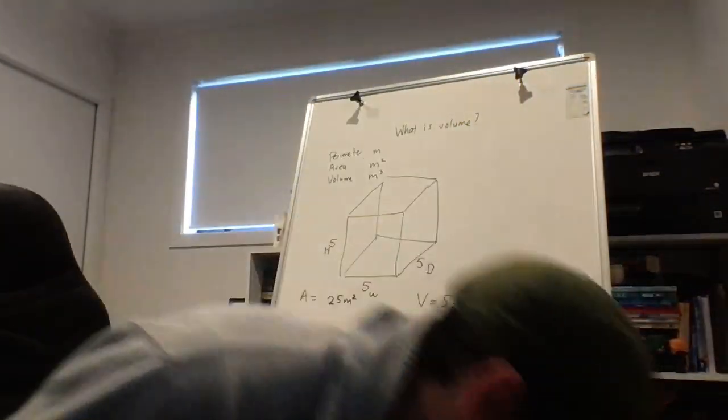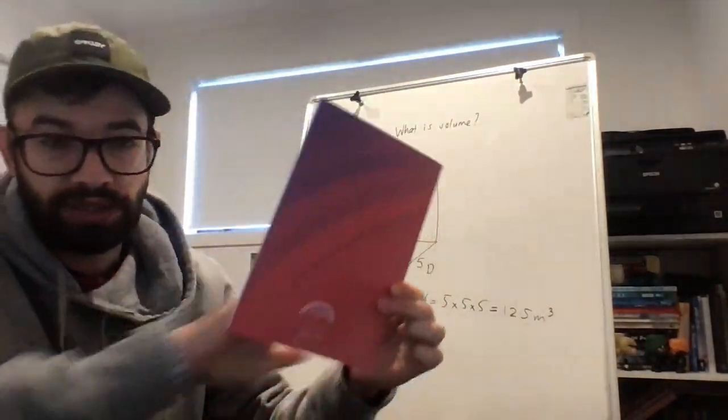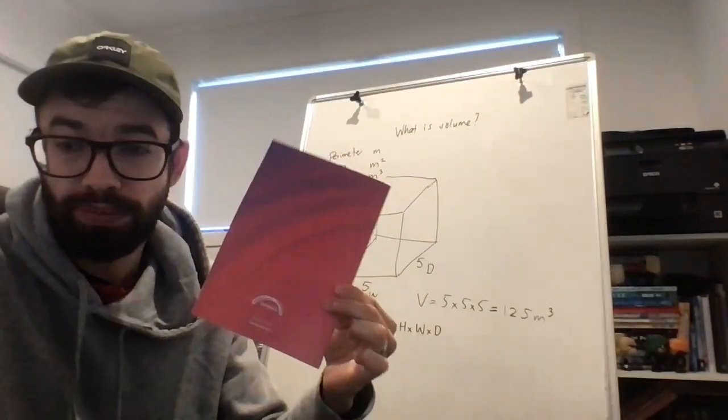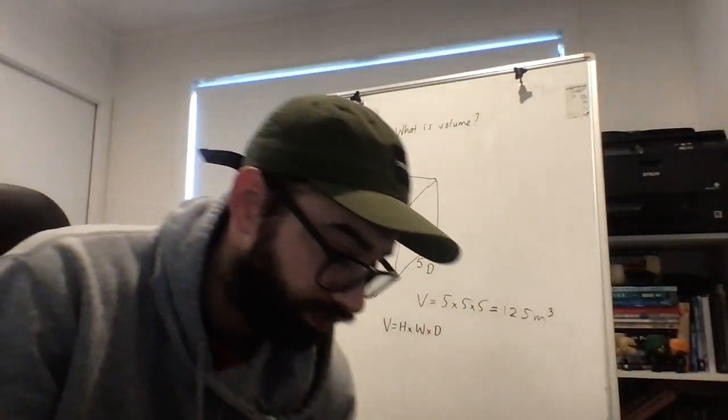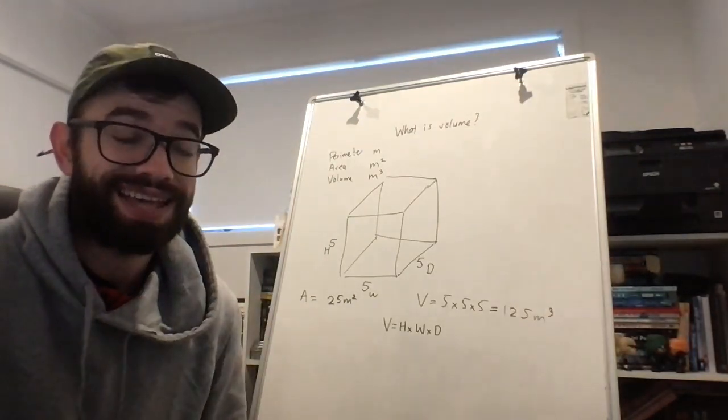You wouldn't, however, be looking for the volume of a piece of paper. You may be looking for the surface area, but you wouldn't be looking for the volume. The volume is for three-dimensional objects that can generally contain something.